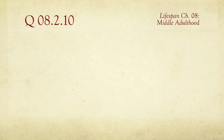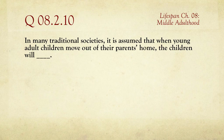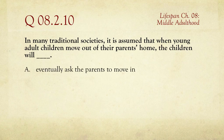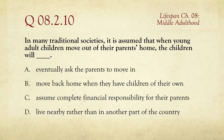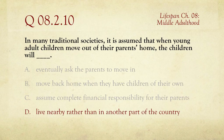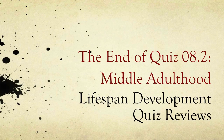Last one, number ten: in many traditional societies, it is assumed that when young adult children move out of their parents' homes, the children will eventually ask the parents to move in, move back home when they have children of their own, assume complete financial responsibility for their parents, or live nearby rather than in another part of the country. The answer is live nearby — in more traditional societies, people more often stay close. That is the end of the second online quiz for Chapter 8 on Middle Adulthood, Psychology 1100 Lifespan Development. Thanks.